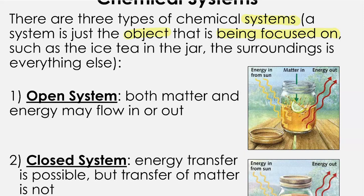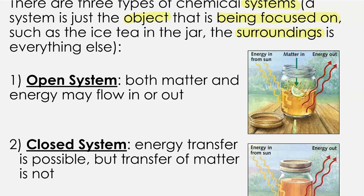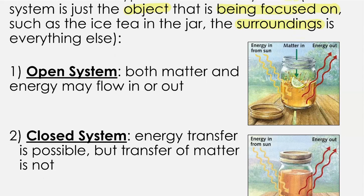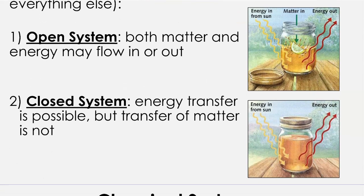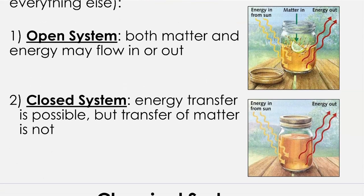The surroundings is another thing we'll look at, especially when we get into calorimetry, and that is going to refer to basically everything other than what we're focusing on in terms of the system. There are three types of systems you would have learned about back in Science 10.